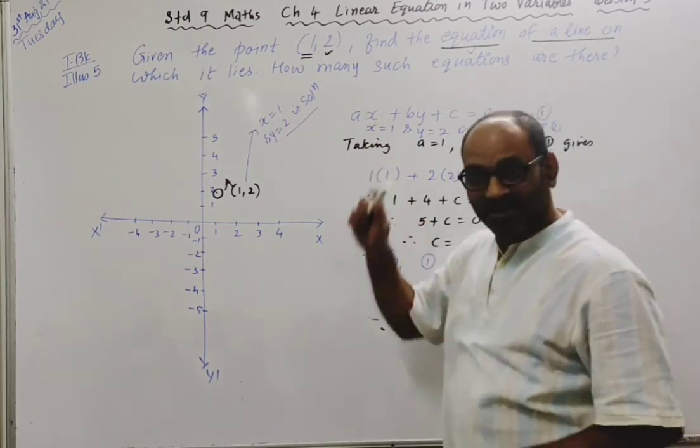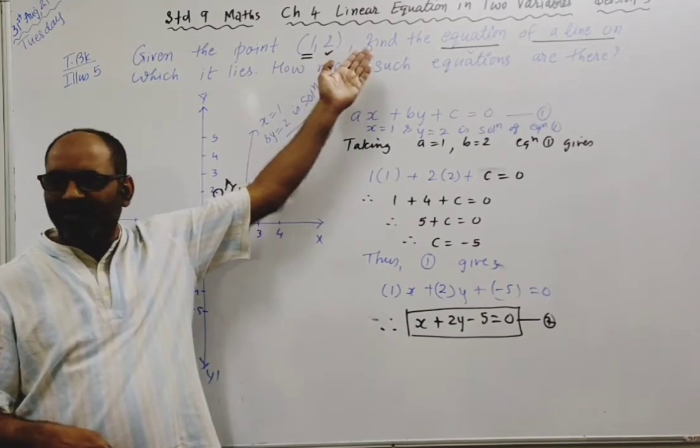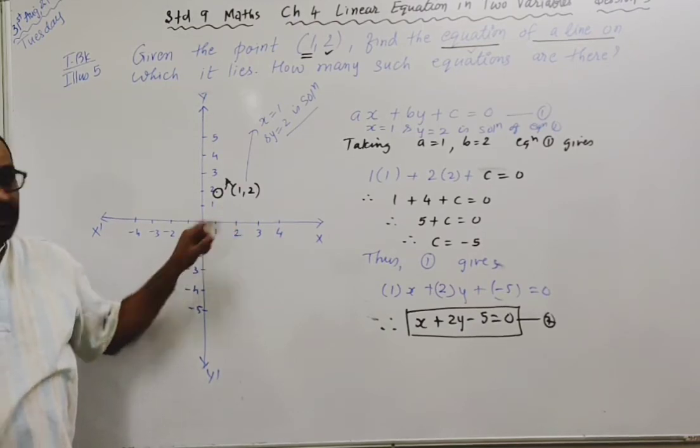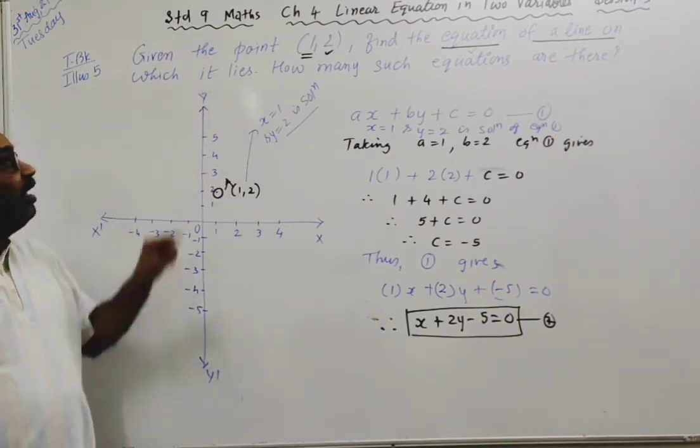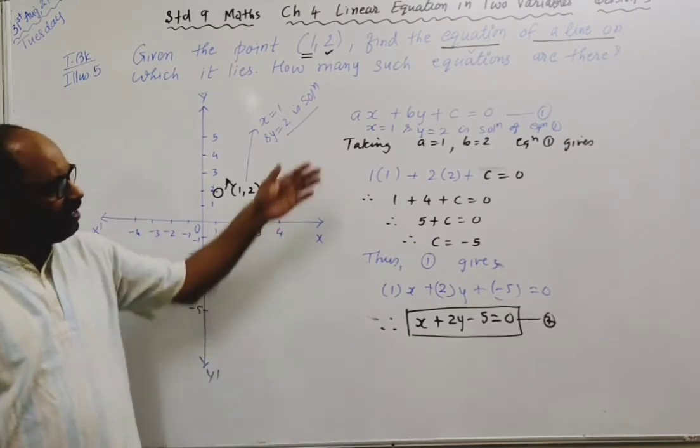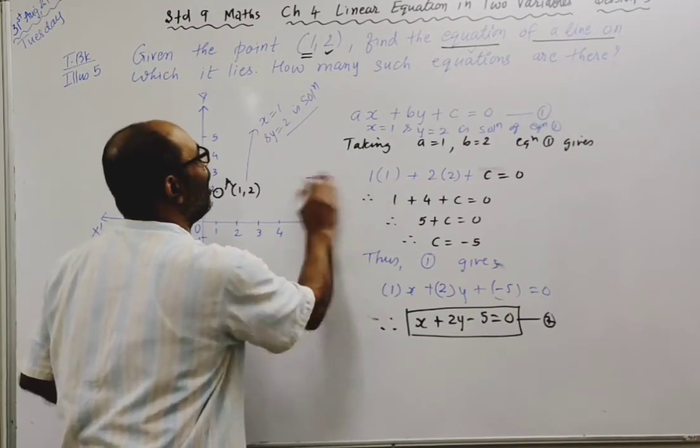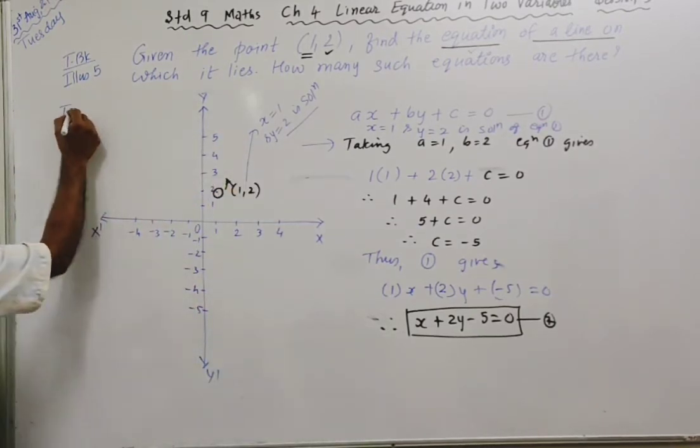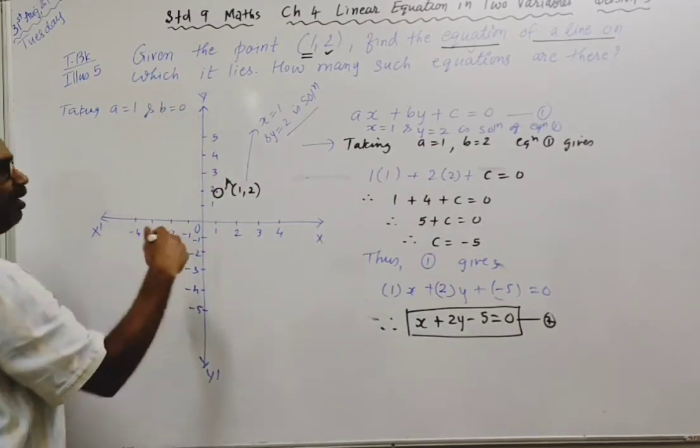Once again, let's understand this question. Given the point (1, 2), I represented it in the Cartesian coordinate plane by point A. Find the equation of line on which it lies. Now you have to change the value of A and B. I'm taking a = 1 but B = 0.